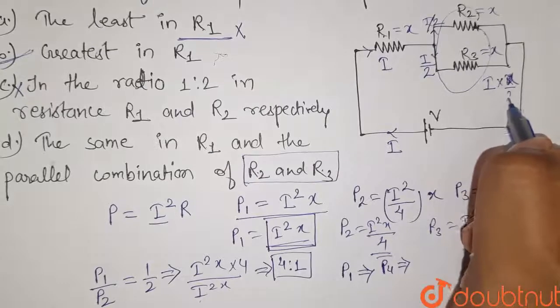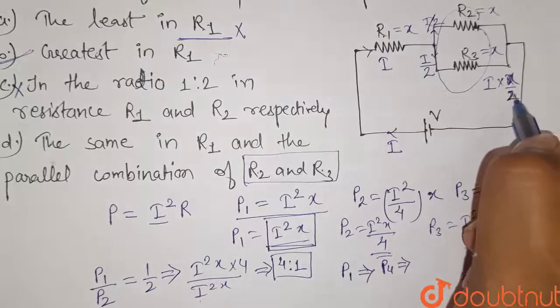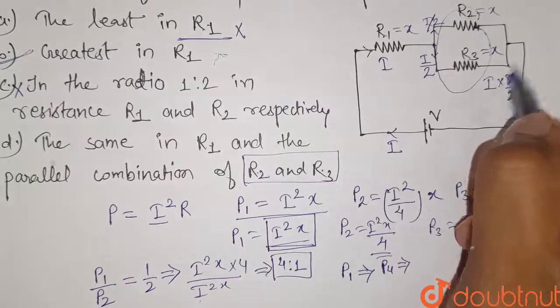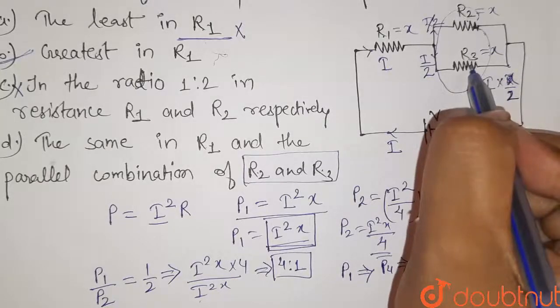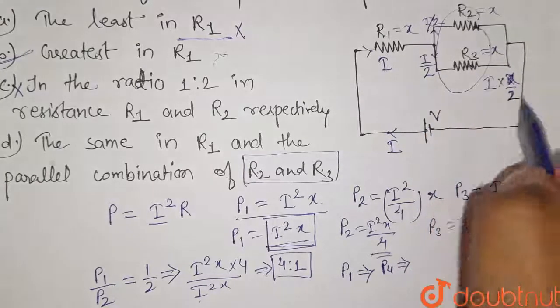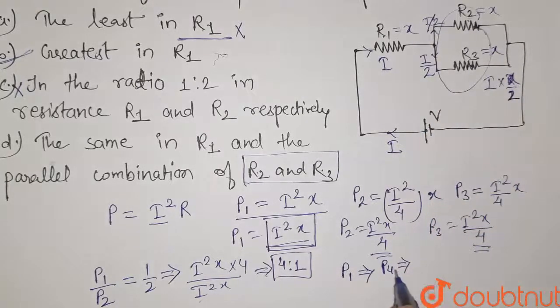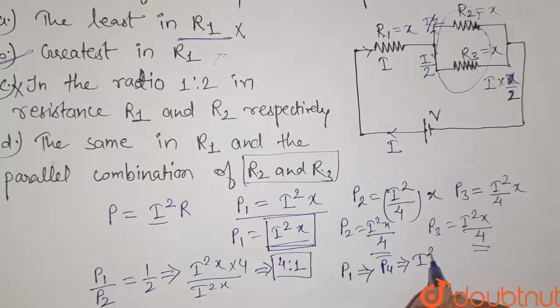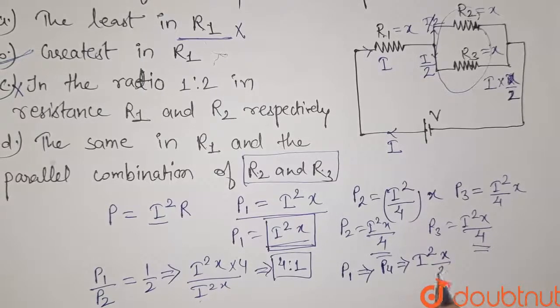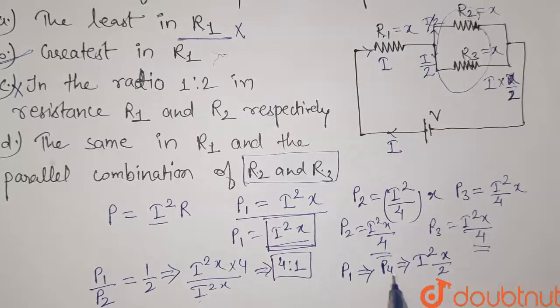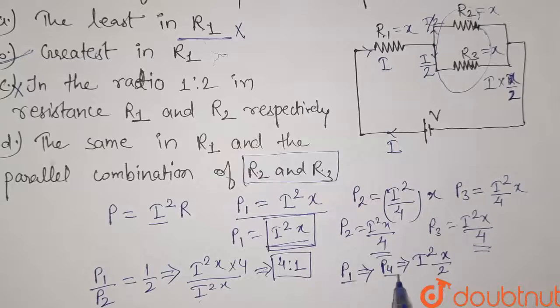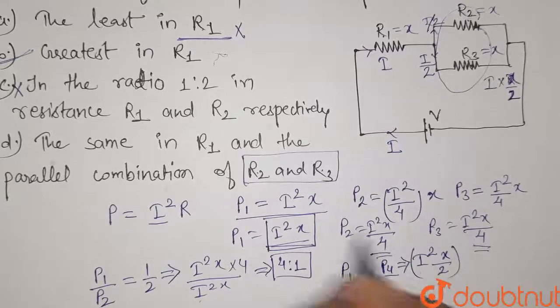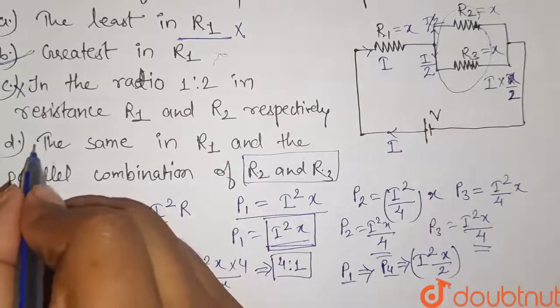Now the power P4 will be equals to I squared into X by 2. And we can see that these two values are not equal. So this option is also wrong option here.